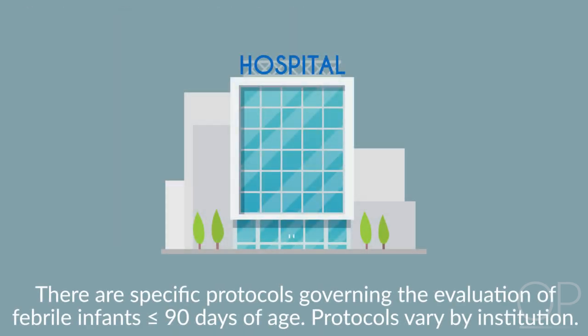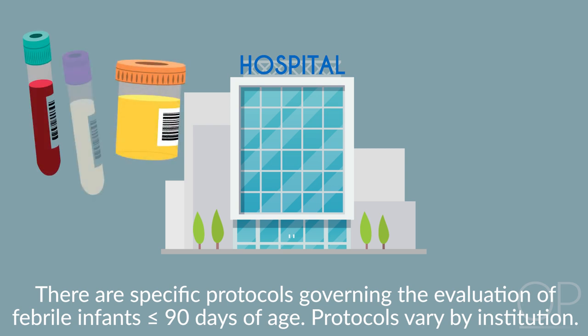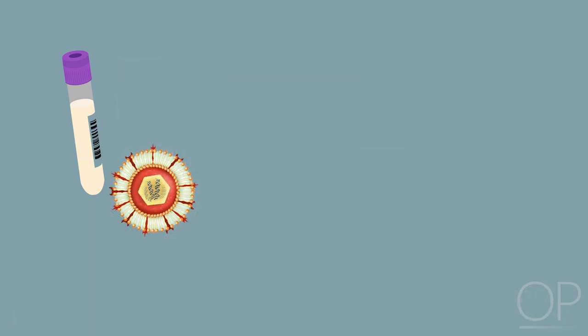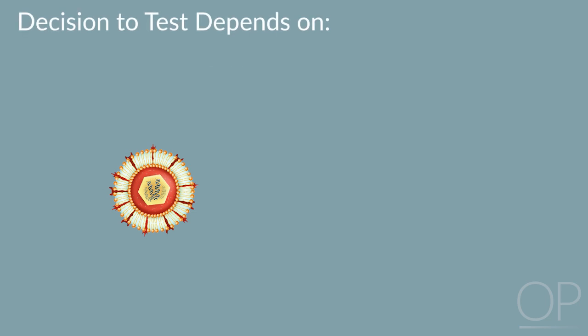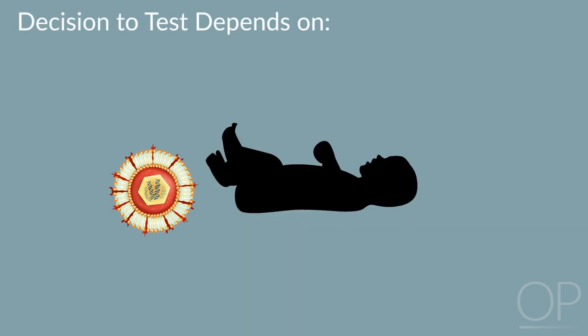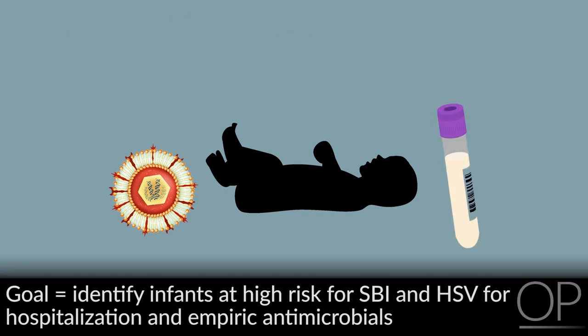There are specific protocols governing the evaluation of febrile infants 90 days of age and younger. Protocols vary by institution but generally involve blood, urine, and cerebrospinal fluid, or CSF, tests via lumbar puncture with bacterial cultures. The youngest infants are also commonly evaluated for invasive HSV infection, specifically HSV meningitis, by sending HSV PCR from the CSF. The decision whether to test for HSV meningitis often depends on age, specific risk factors, and whether there is a CSF pleocytosis. The goal of such evaluations is to identify infants at risk for SBI and HSV for hospitalization and empiric antimicrobials.